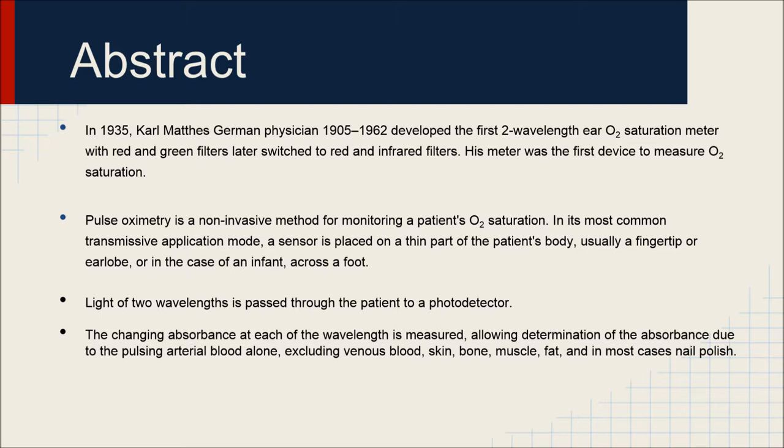In 1935, Karl Mays, German physician, developed the first two-wavelength ear O2 saturation meter with red and green filters later switched to red and infrared filters. His meter was the first device to measure O2 saturation.